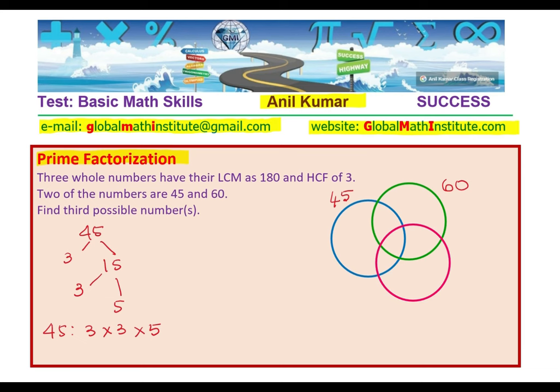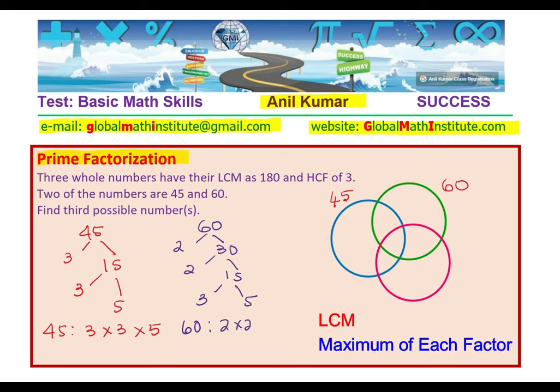And now, let us look into the factors of 60. Factors of 60 are, we can divide by 2, you get 30. Then again by 2, you get 15 and 15 is 3 times 5. So the factors of 60 are 2 times 2 times 3 times 5.